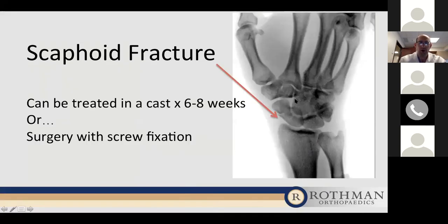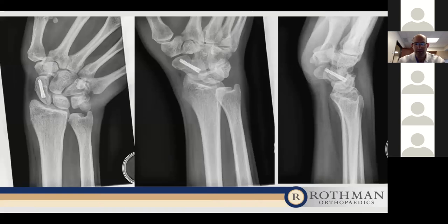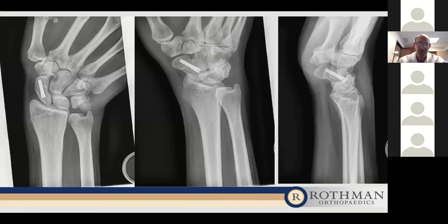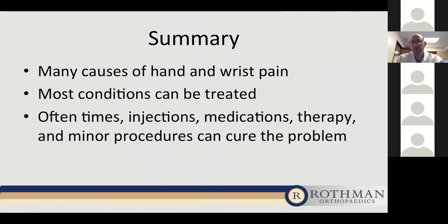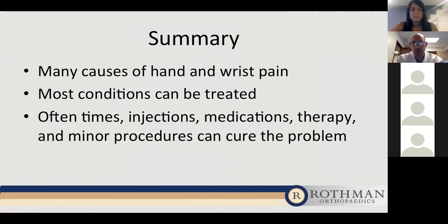The most common carpal bone fracture we see is the scaphoid fracture. That's a really interesting bone because it's covered almost circumferentially in cartilage, and it doesn't have the best blood supply. So when we have a fracture through a bone like this, we like to fix it with a screw to hold things in better position. In summary, there are many causes for hand and wrist pain. Most of what I see and treat can be handled without surgery, but when those treatment measures don't work, there's often a surgery that can help cure the problem indefinitely.